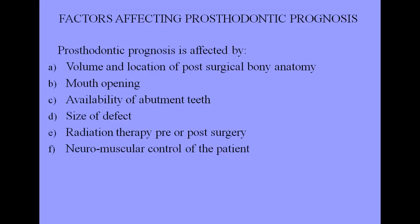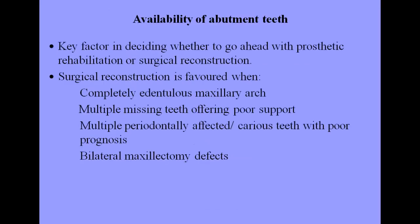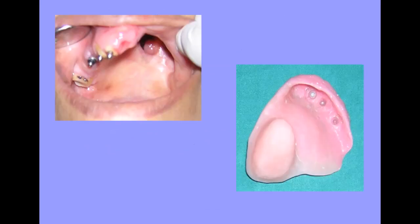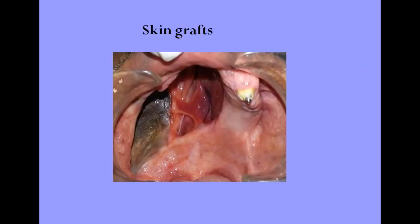There are several factors which can affect prosthodontic prognosis: volume and location of post-surgical bone anatomy, mouth opening, availability of abutment teeth, size of the defect, radiation therapy, and neuromuscular control of the patient. Availability of teeth is a very important factor, and for this you need to maintain coordination with your surgeon so that maximum abutment teeth can be preserved. Here you can see that a few root stems and abutment teeth were preserved, and these root stems can be utilized for placing attachments which can be used for fabrication of the definitive prosthesis.